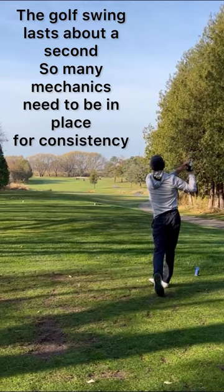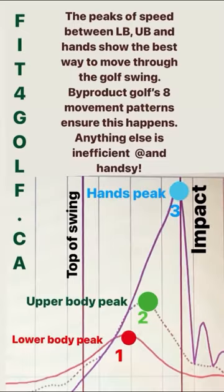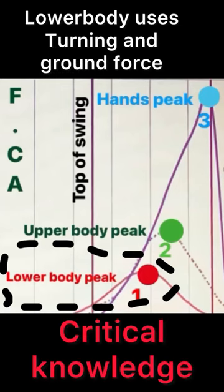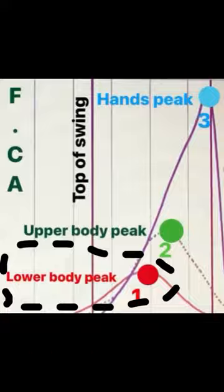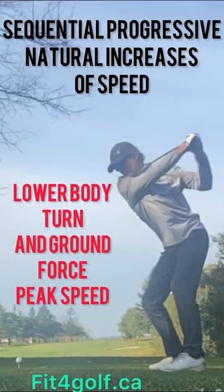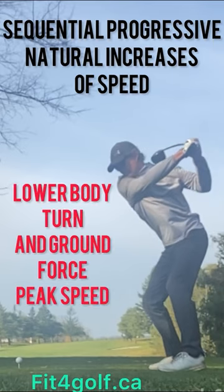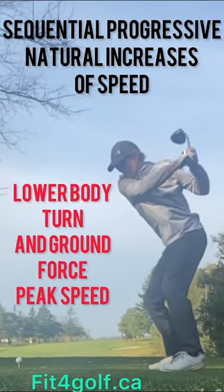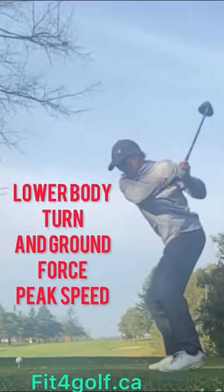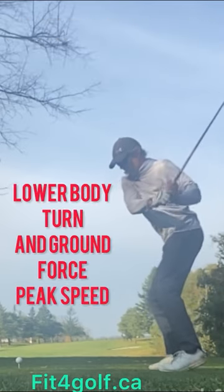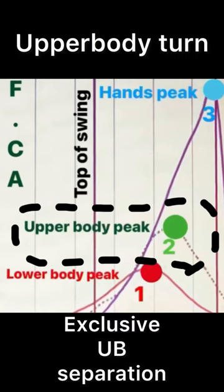The kinetic chain is best illustrated through a 3D analysis graph. After a well-balanced on-plane backswing, a three-part sequential process begins through the downswing and into impact. The lower body turns and is accelerated through the use of ground force on the lead leg, clearing the lead hip.